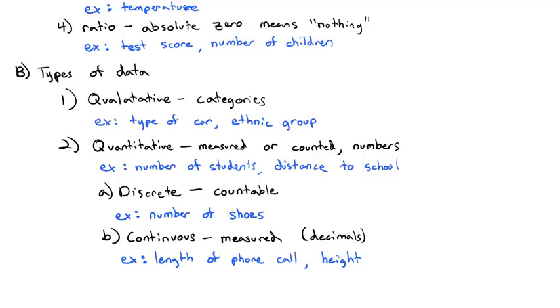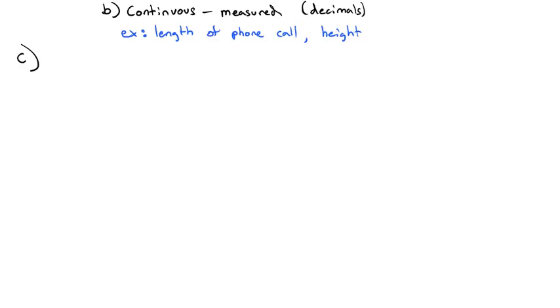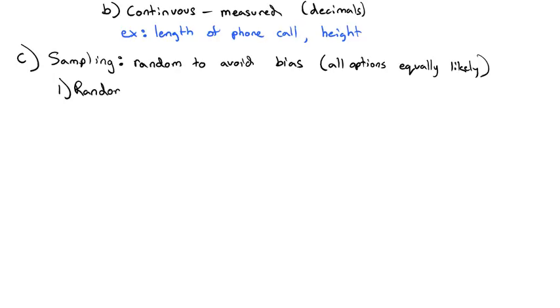So that's the different levels of measurement we can do with different types of data. But we haven't answered the question of how do we collect our data, which is what we said we wanted to do at the beginning. So let's take a look at actual sampling of data. How do we collect it? When we collect data in a sample, we want it to be representative of the entire population. In order for it to be representative of the entire population, we need the data to be random to avoid any bias. In other words, we want all options to be equally likely to be included in our sample. So if random is best, let's take a look at a few random sampling methods.